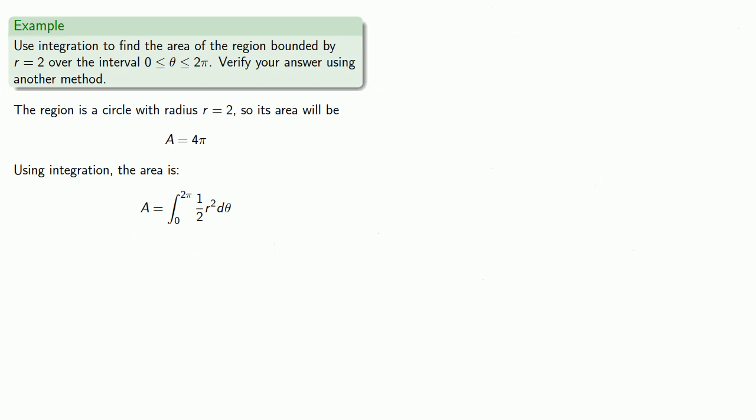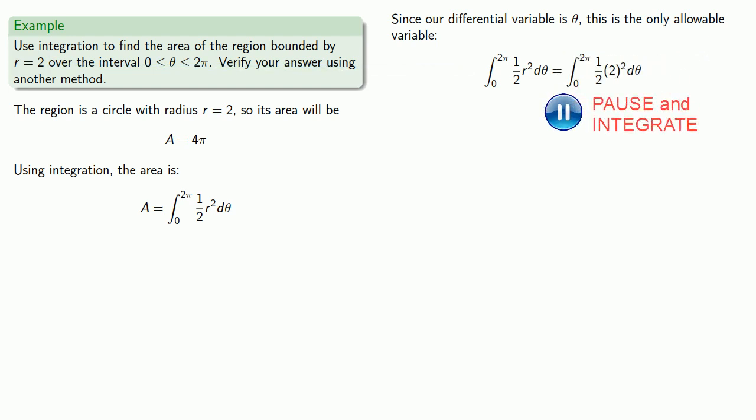Since our differential variable is theta, this is the only allowable variable. So we need to replace r with something else. And since r equals 2, we can replace it and do the integral. Which gives us our area of 4π, which is what we expected it to be, because we know that the region is in fact a circle.